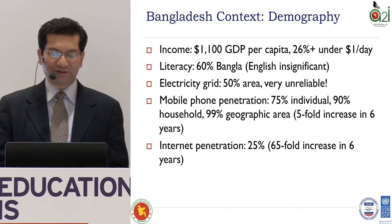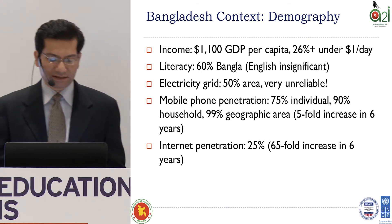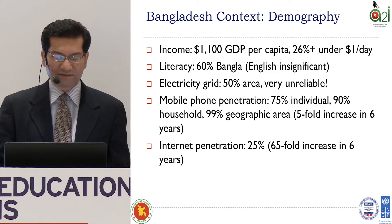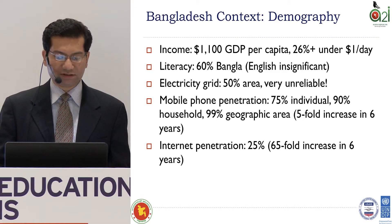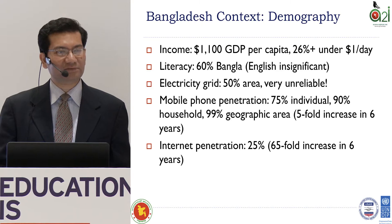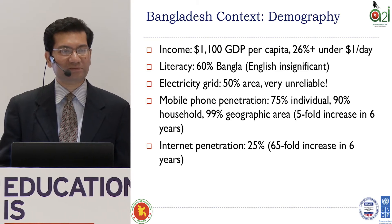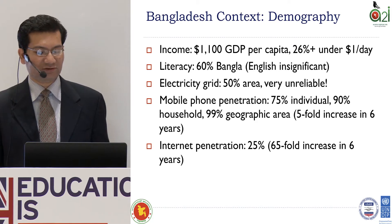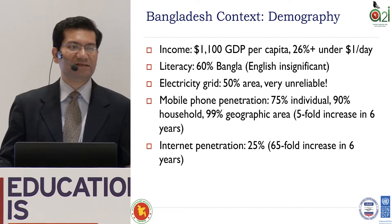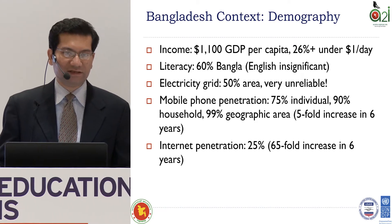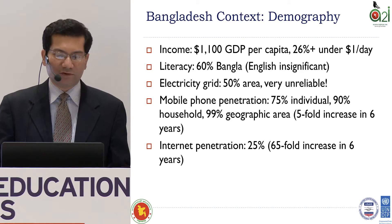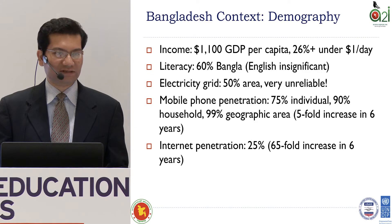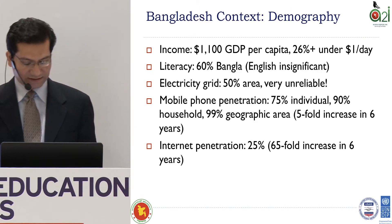Mobile phone penetration has increased dramatically in the last six years, from about 50% six years ago to about 75% individuals and 90% household penetration now. Internet penetration has had an even more dramatic rise in the last six years, from less than 1% to 25% now — a 65-fold increase in the last six years.